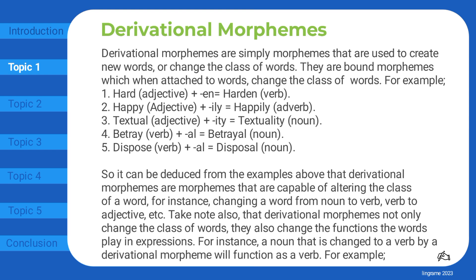So it can be deduced from the examples above that derivational morphemes are morphemes that are capable of altering the class of a word — for instance, changing a word from noun to verb, verb to adjective, etc. Take note also that derivational morphemes not only change the class of words; they also change the functions the words play in expressions.